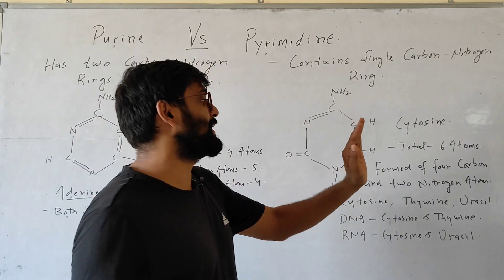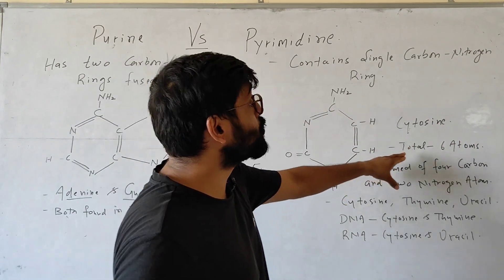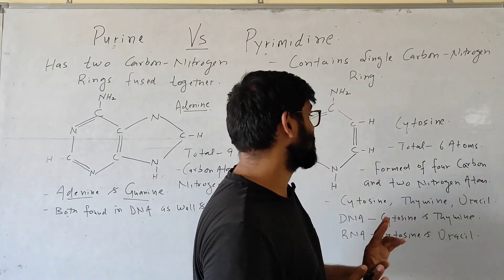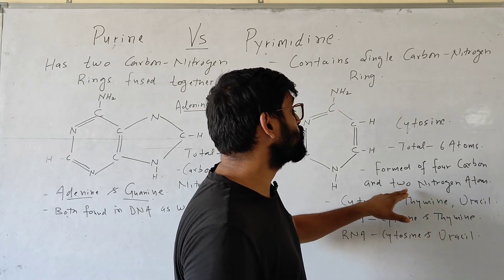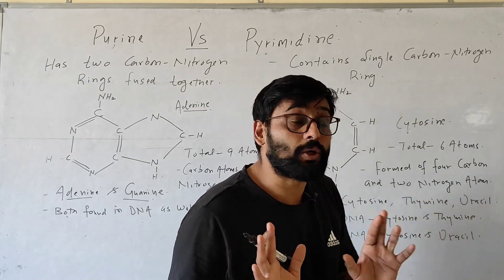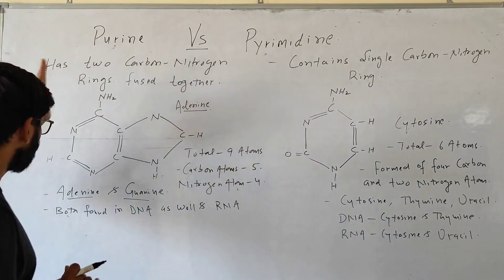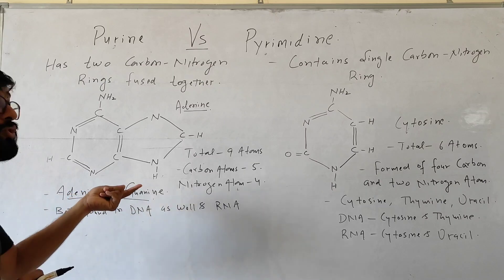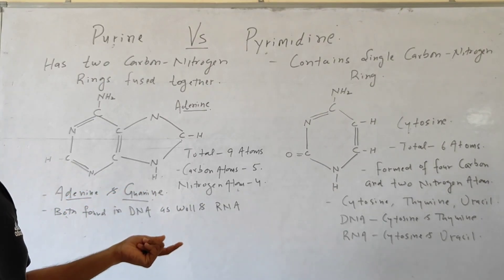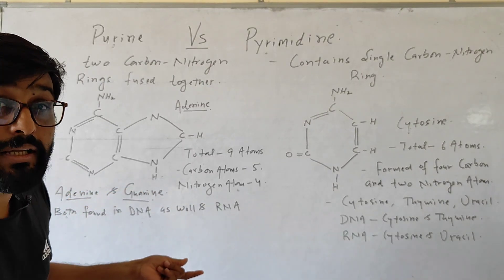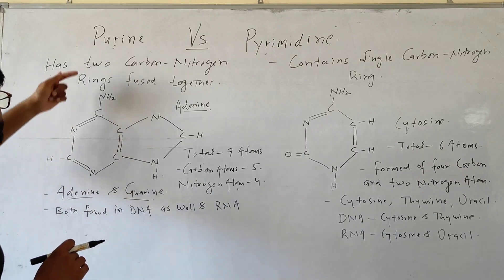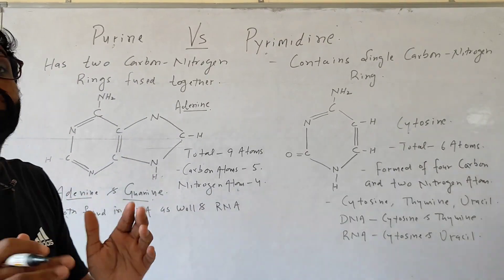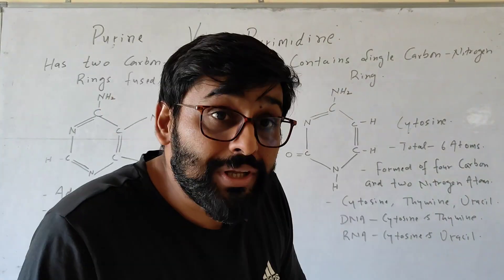In the case of Pyrimidine, there are a total of six atoms: four are carbon and two are nitrogen atoms. In Purines, adenine and guanine are included.